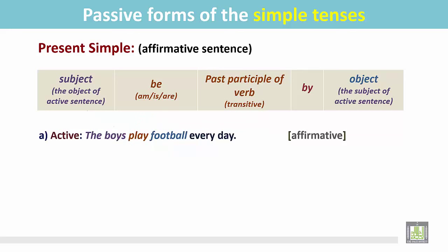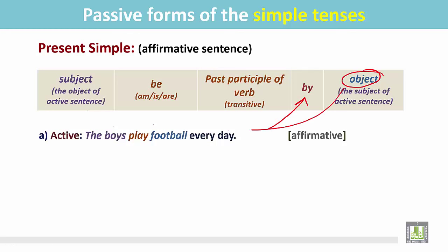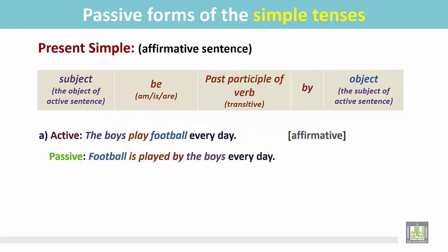So we can change this active sentence into passive. We follow this structure: first, we write the subject, and it is the object of the active sentence. Then, according to the number of the subject, we add the be verb. After that, we need the past participle form of the transitive verb. Then we add 'by,' the preposition, and finally we add the object, which is the subject of the active sentence.